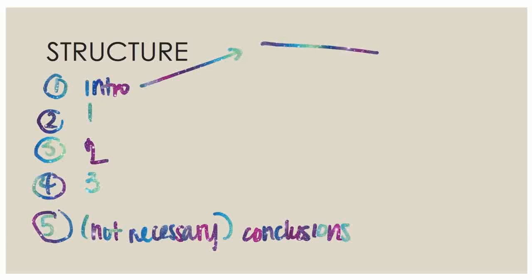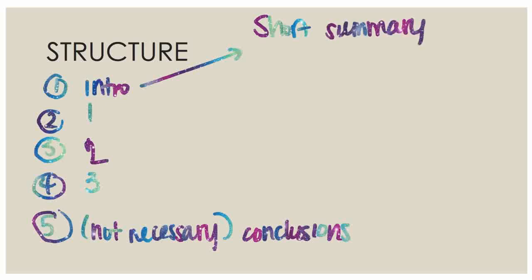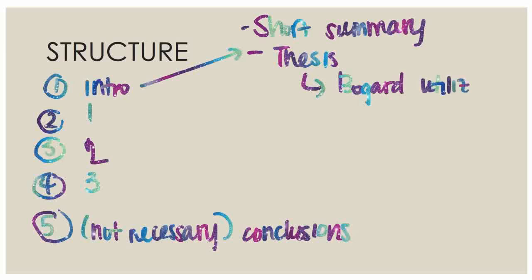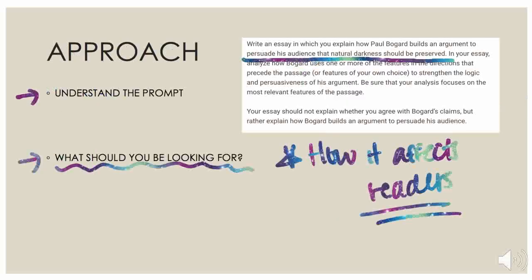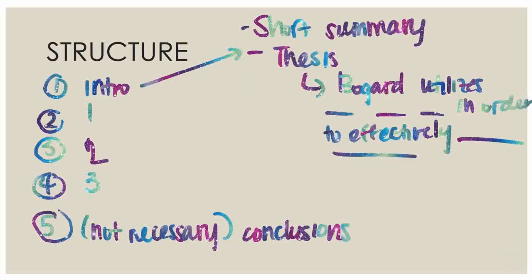So let's start off with the introduction: a short summary, and then your thesis. Your thesis should be: 'Bogard utilizes this, this, and this' — or whatever the author's name is — how many you want to use, I recommend three. Then: 'in order to effectively persuade his audience that natural darkness should be preserved' — you can literally copy that part from the prompt, or put it in your own words, but copying it is more efficient. And that is your thesis. The short summary should just talk about what the author does — he argues, classifies, analyzes — all of that is fine.